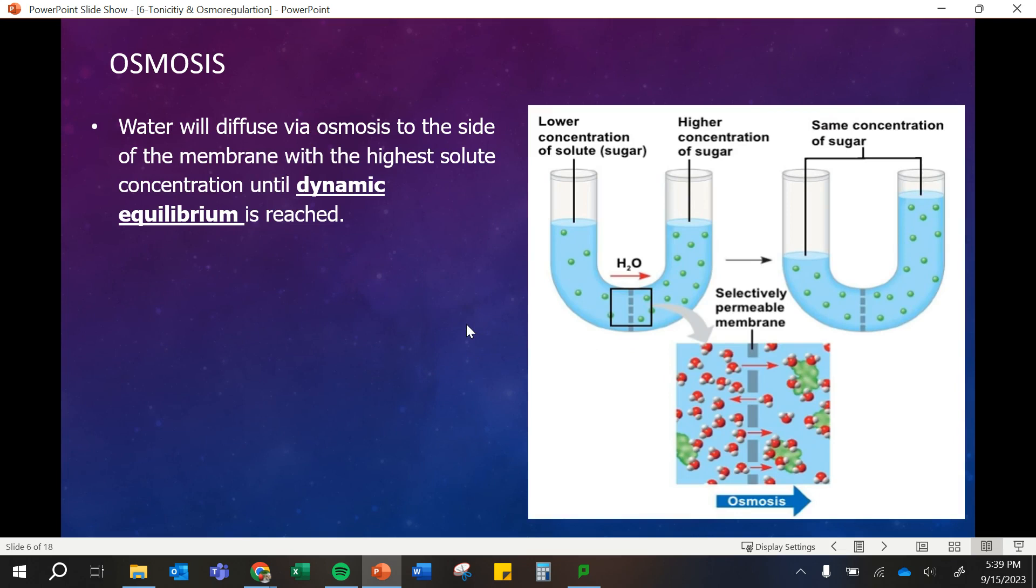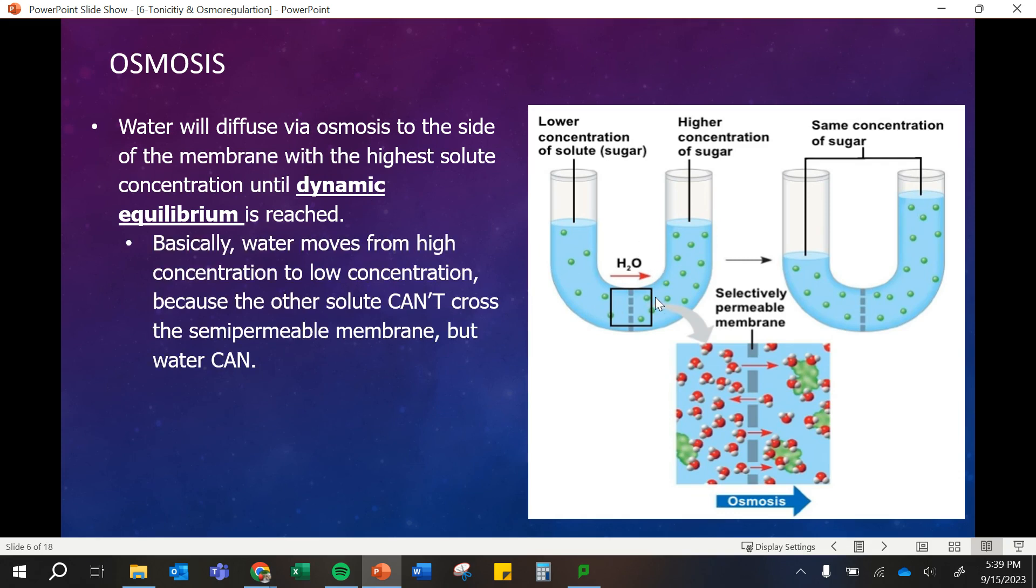So osmosis is just that water diffusing, and it's going to diffuse until we create an equilibrium. We call this dynamic equilibrium because the water is still constantly moving back and forth. The water will move until both sides, inside and outside of the cell, are equal in their concentrations. You can think about this as water is going to move from a high concentration to a low concentration because the other things can't move through the membrane. So the water will move to dilute the particles.